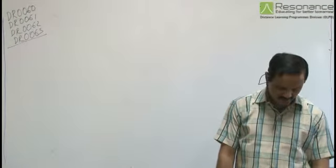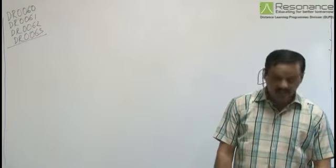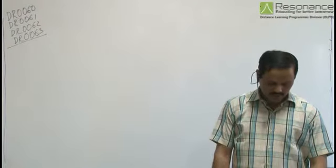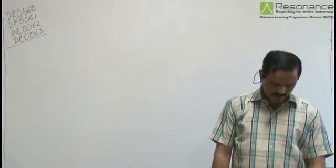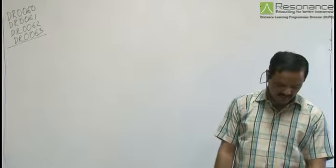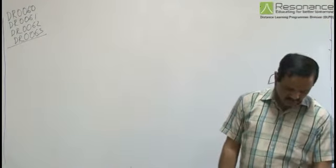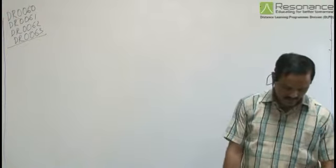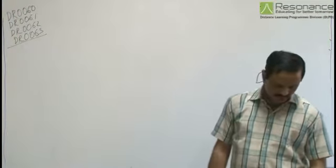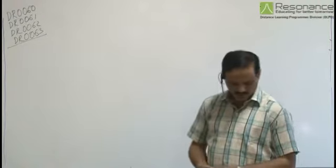In this comprehension, the position of a particle is given by x = 2t - t², where t is expressed in seconds and x is in meters. The positive direction is towards the right. In the first question, the acceleration of the particle has to be found.